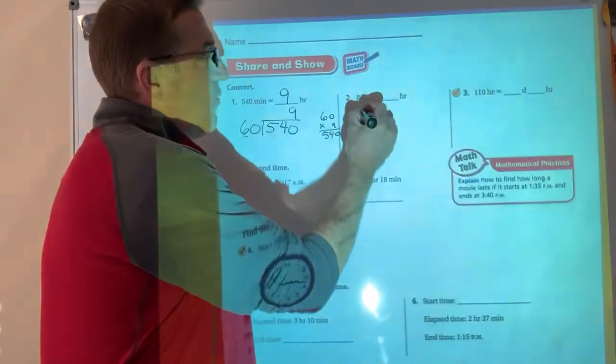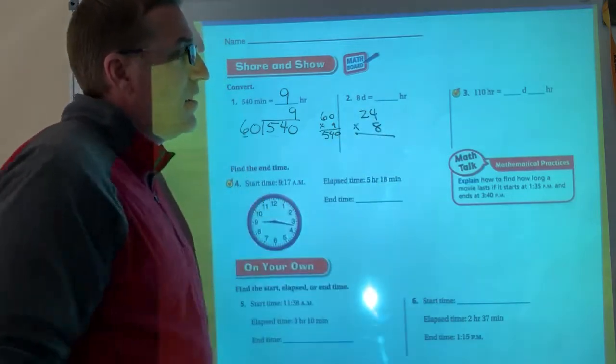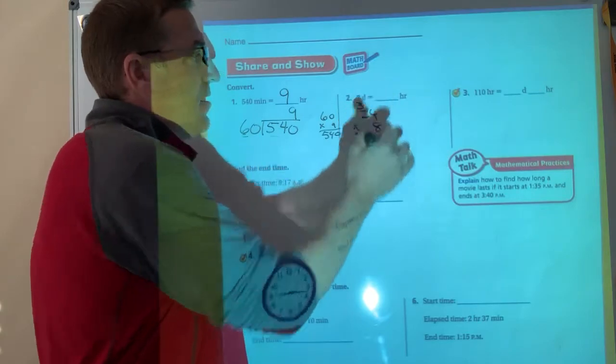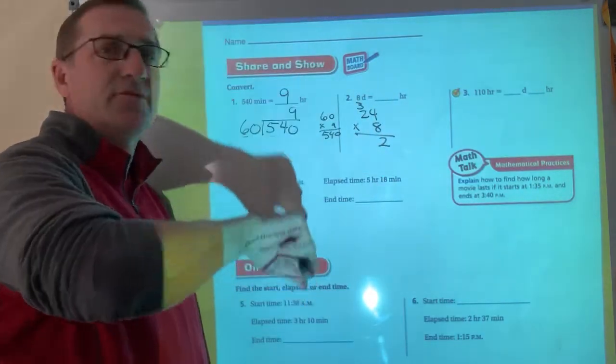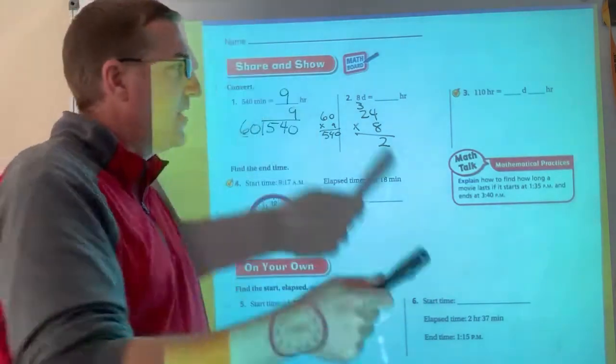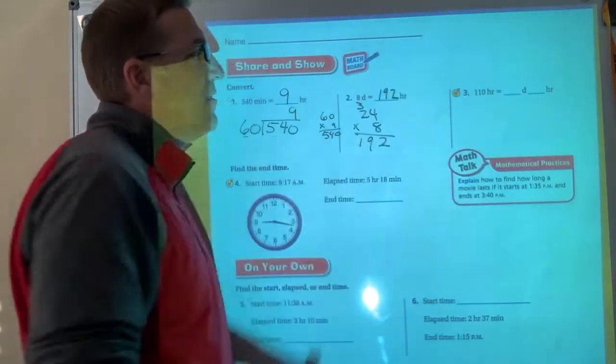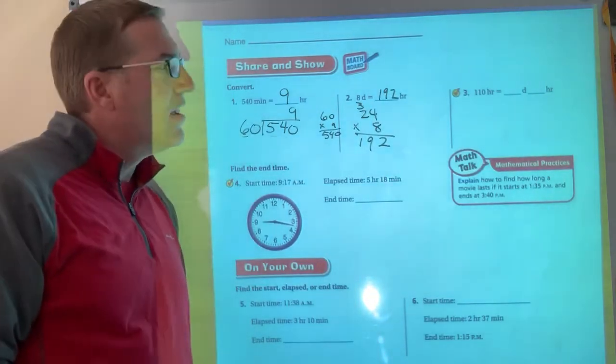So I'm going to take 24. I'm going to multiply that by eight. Eight times four, 32. Eight times two is 16 plus three, 19. Good. So I got 192 hours. So eight days is 192 hours from now.